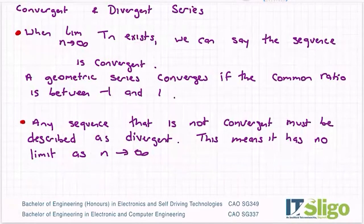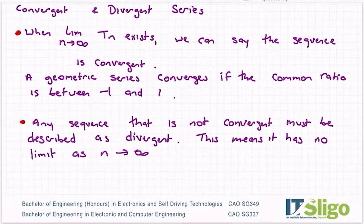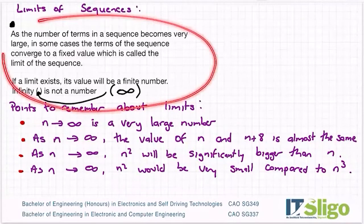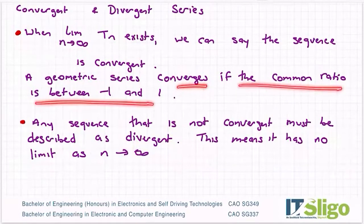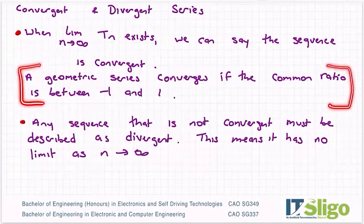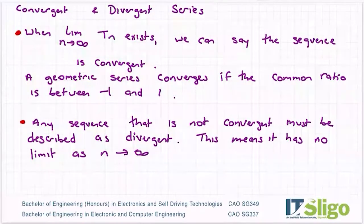So then the last bit of theory I want to do on limits of sequences and series is what is a convergent and a divergent series, and it's tied into this as to whether there's a limit or not. So when the limit as n tends to infinity of tn exists, we can say that the sequence is convergent. A geometric series converges if the common ratio is between minus 1 and 1. So if it converges, if a limit exists, then it converges.